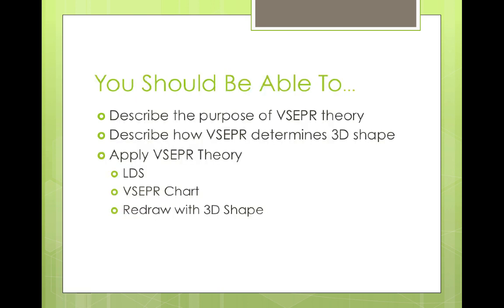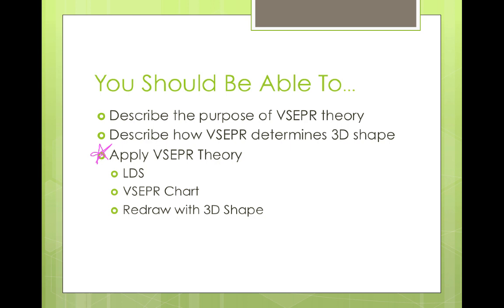At this point, you should be able to describe what VSEPR theory does — generating three-dimensional shapes from two-dimensional Lewis dot structures. You should be able to briefly describe how it works — minimizing repulsion forces — and most importantly, apply VSEPR theory: draw the Lewis dot structure first, reference it to your VSEPR chart, and redraw the molecule in three dimensions using the chart information. We'll spend more time practicing in class, but once you understand how the theory works, application tends to be relatively simple with just a couple of practice problems.